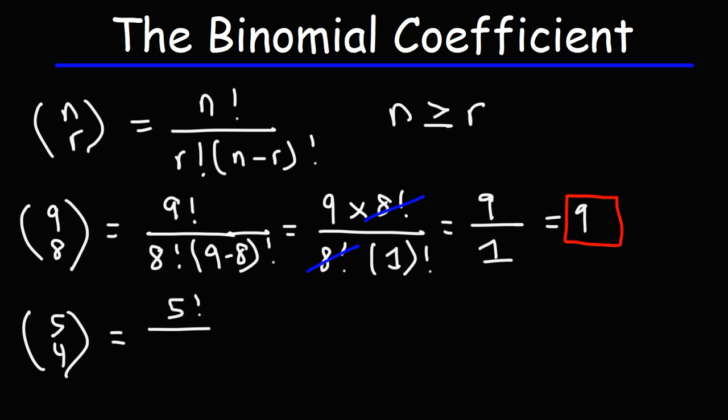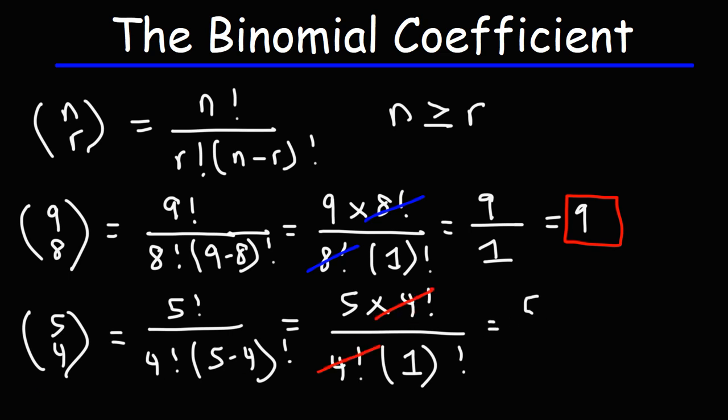So n is 5, r is 4. 5 factorial is 5 times 4 factorial. And 5 minus 4 is 1. So now we can cancel 4 factorial, and we're going to get a similar situation. We're going to get 5.